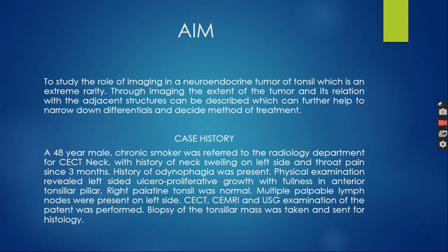Case history: A 48-year-old male chronic smoker was referred to the radiology department for contrast CT neck with history of neck swelling on the left side and throat pain since 3 months. History of odynophagia was present. Physical examination revealed left-sided ulceroproliferative growth with fullness in the anterior tonsillar pillar; right palate and tonsil was normal. Multiple palpable lymph nodes were present on the left side. Contrast CT, contrast MRI and USG examination of the patient was performed. Biopsy of the tonsillar mass was taken and sent for histology.